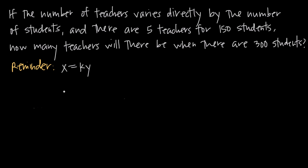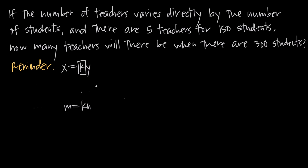I could also write this as a = kb or m = kn — there are many ways to write it. The point is that k is our constant of variation and the two letters on either side are the variables that are directly related to one another.